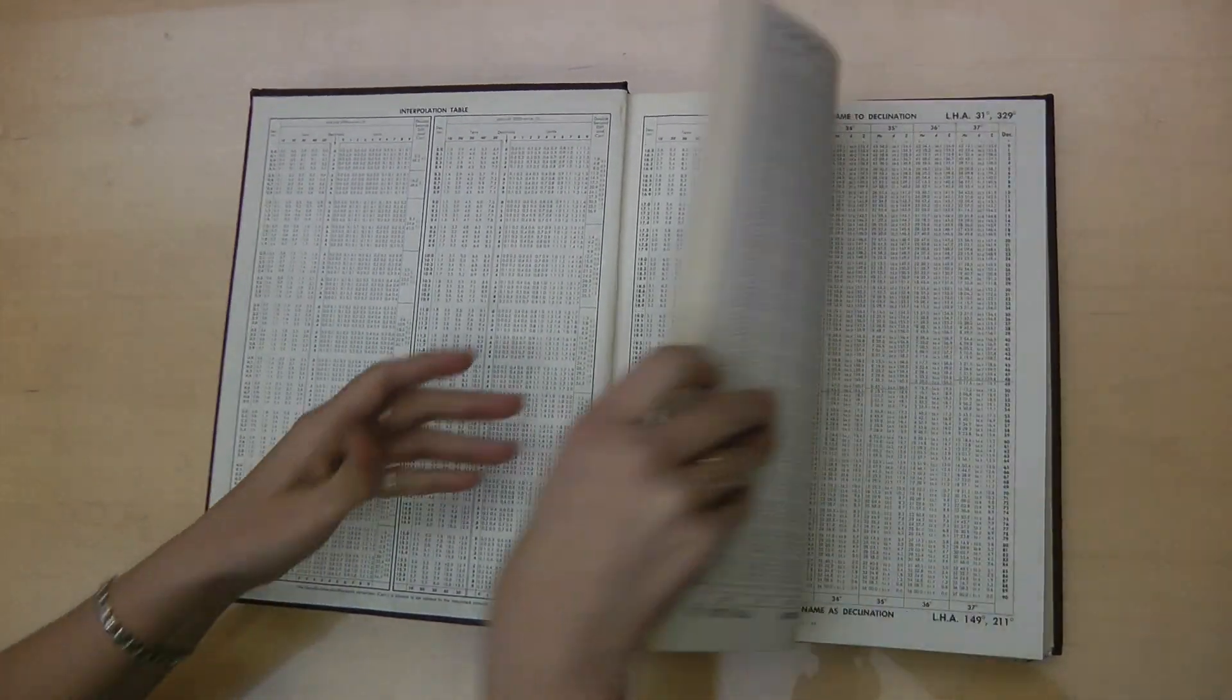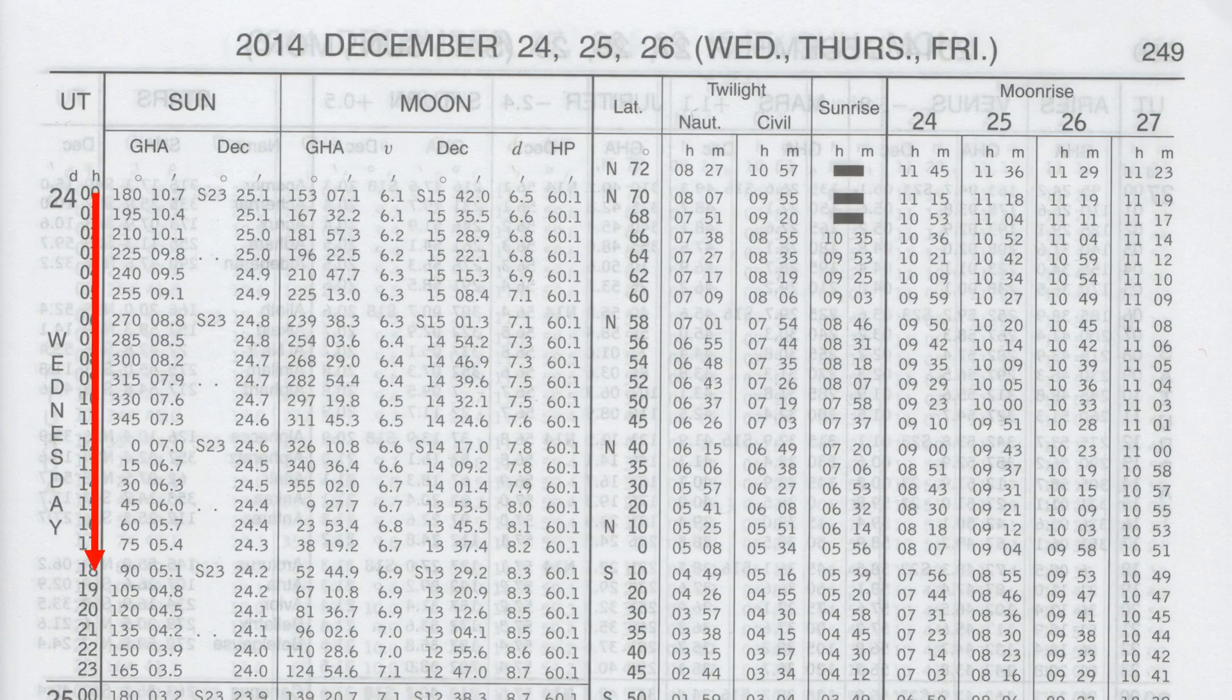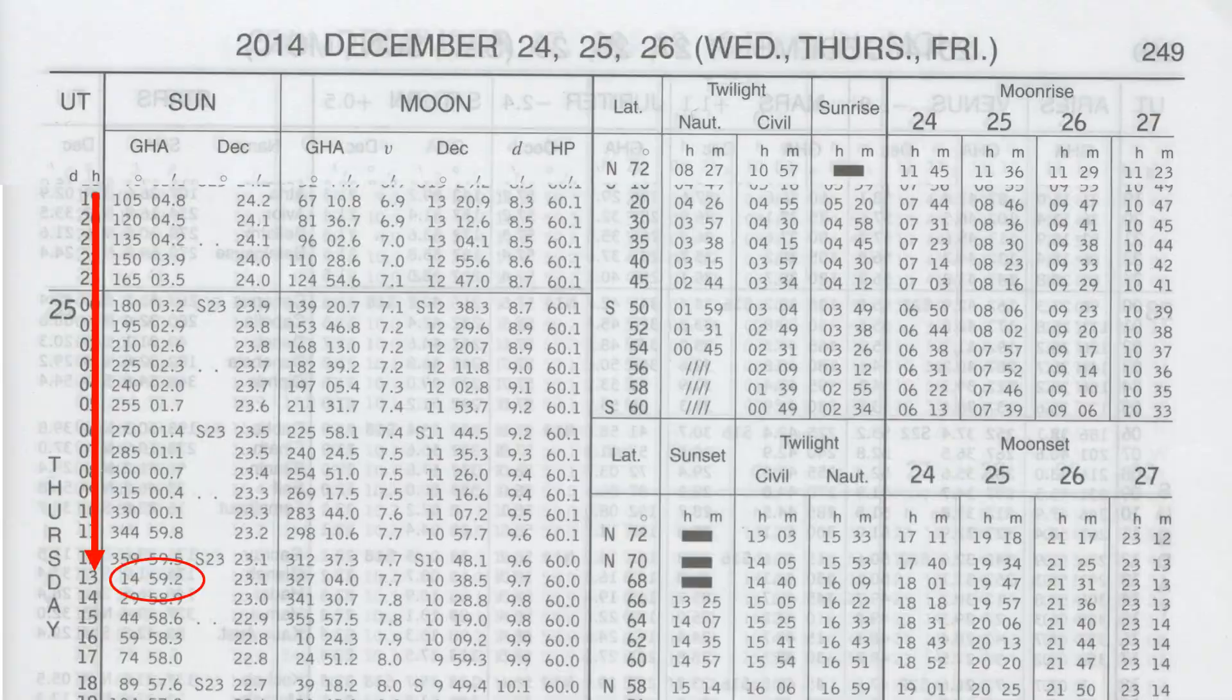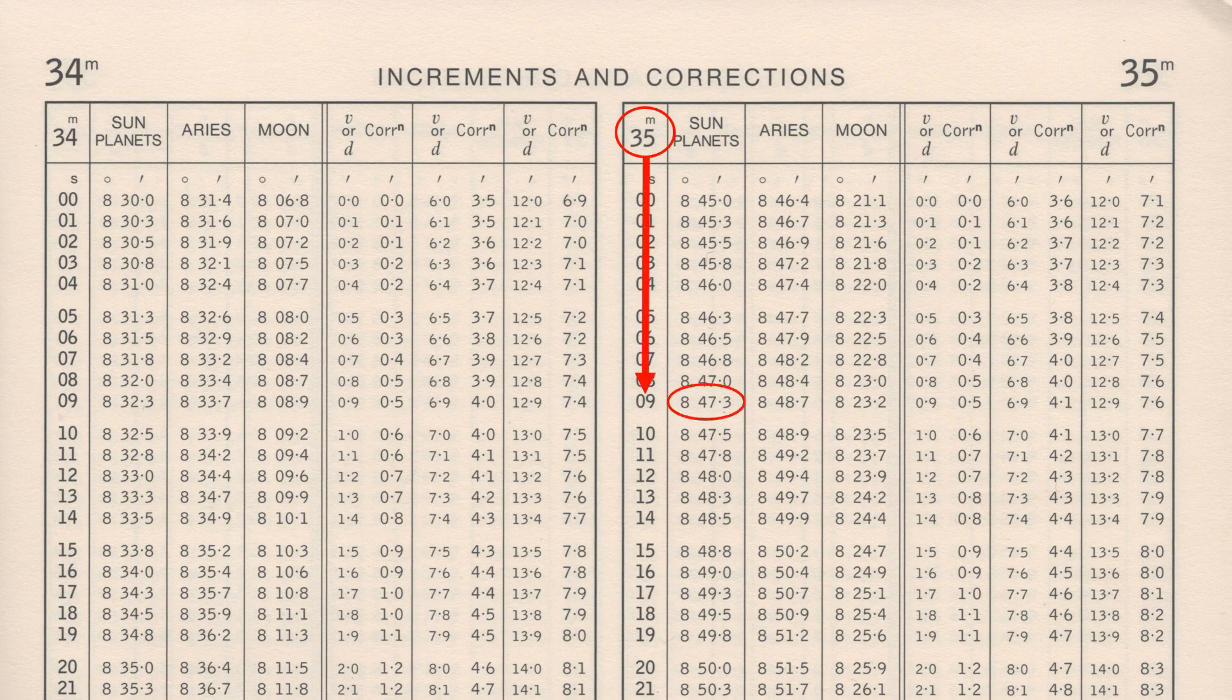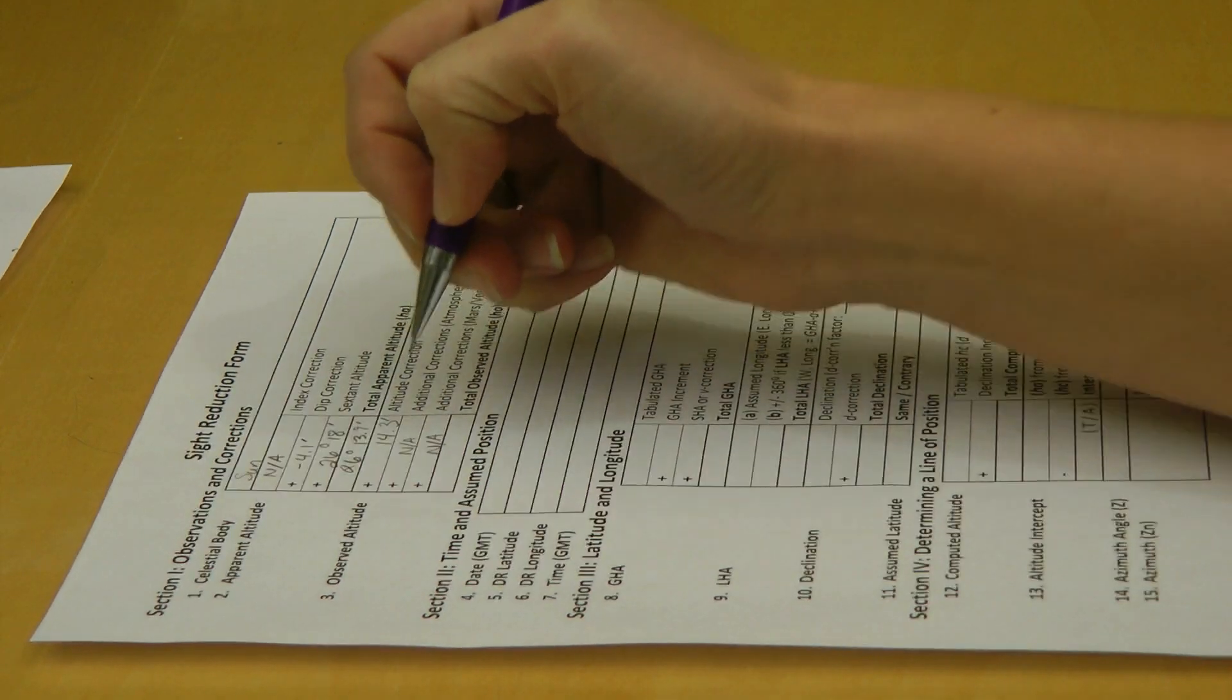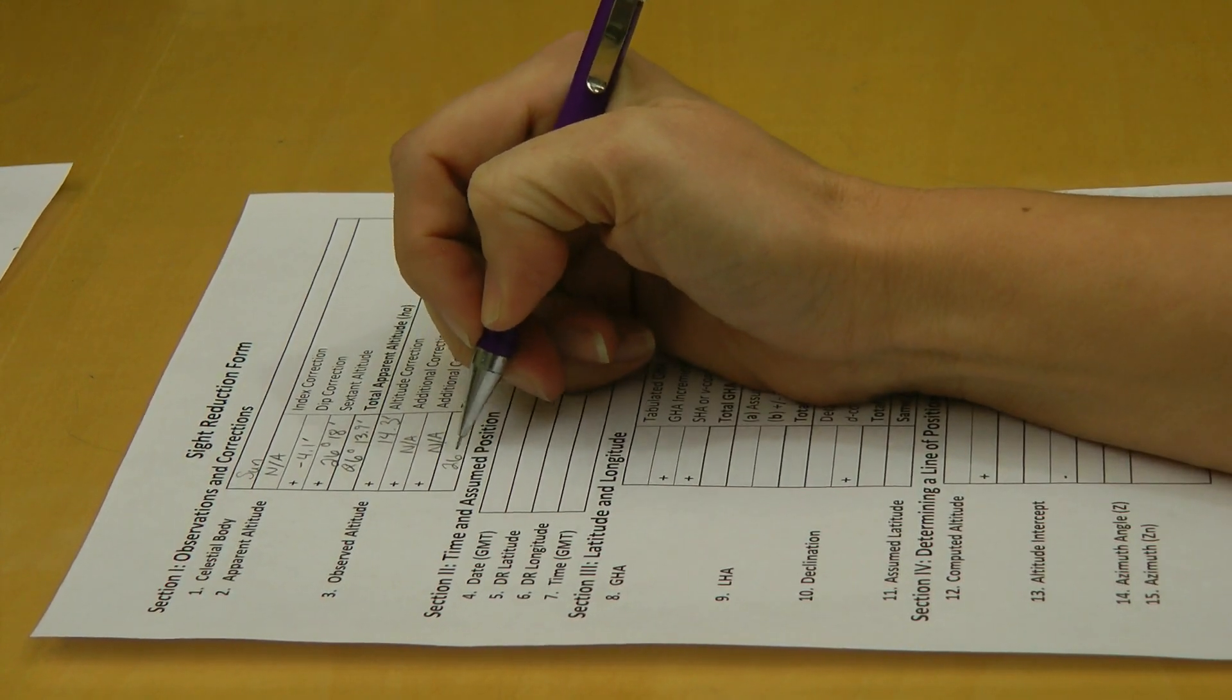By using publications produced by the US Navy and their UK partners, spherical trig calculations are replaced by tables, and this process is greatly simplified. Only addition and subtraction are needed to complete a site reduction form and obtain a line of position.